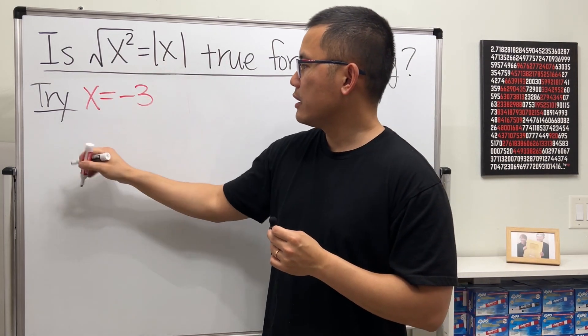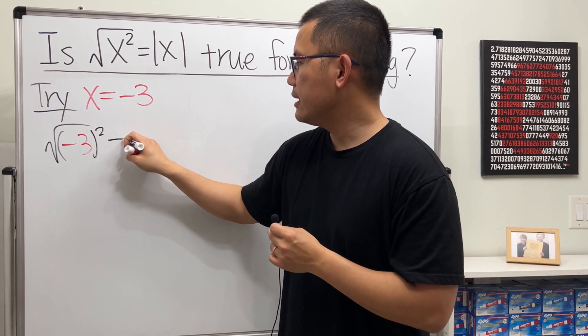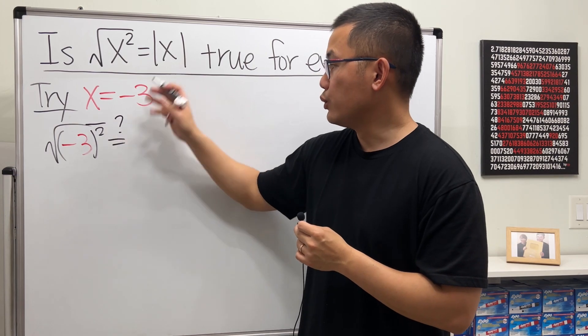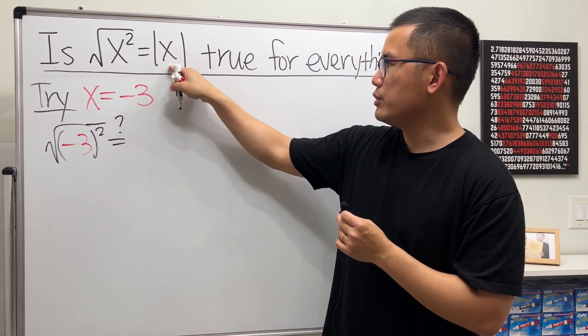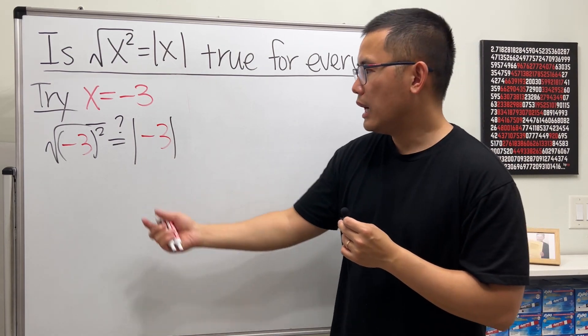Plug in this right here, then we get square root of parentheses negative 3 squared, and I will have to just use the formula. Put negative 3 here in the absolute value. Is this true?